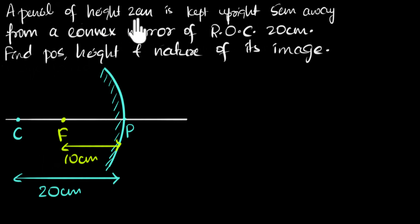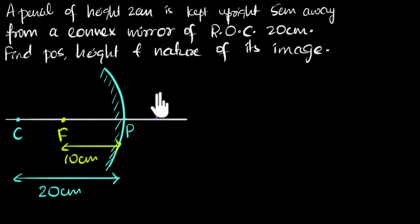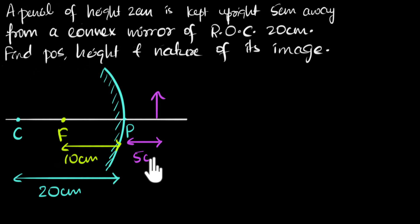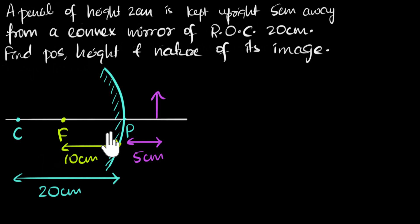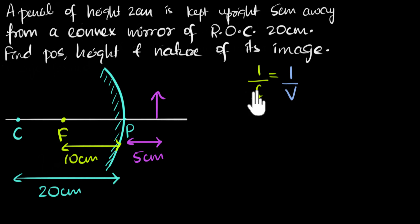The pencil of height two centimeters is kept five centimeters away from the convex mirror. So the pencil is kept somewhere over here, and this distance is five centimeters. We know the object distance and the focal length, so we have to calculate the image distance. The first step is to write down the mirror formula: one over f equals one over v plus one over u.